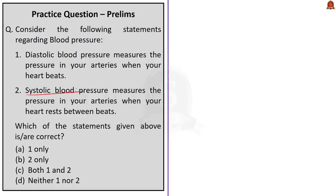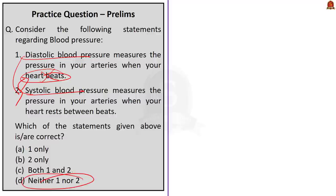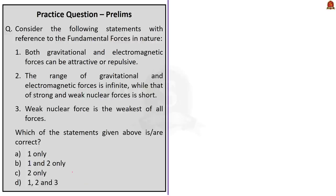Looking at the statement: diastolic blood pressure measures the pressure in your arteries when your heart beats. This statement is wrong — it is the systolic blood pressure that measures pressure when your heart beats. Diastolic blood pressure measures the pressure in your arteries when your heart rests between beats. So when the heart relaxes, it is diastolic blood pressure. The right answer is option D — neither one nor two.